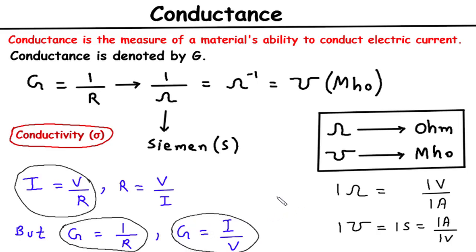To calculate conductance, we use the formula G equals 1 by R, where G is the conductance and R is the resistance. The higher the conductance value, the more easily current can flow through the material. Conductance is a measure of how open a material is to the flow of electric charge.